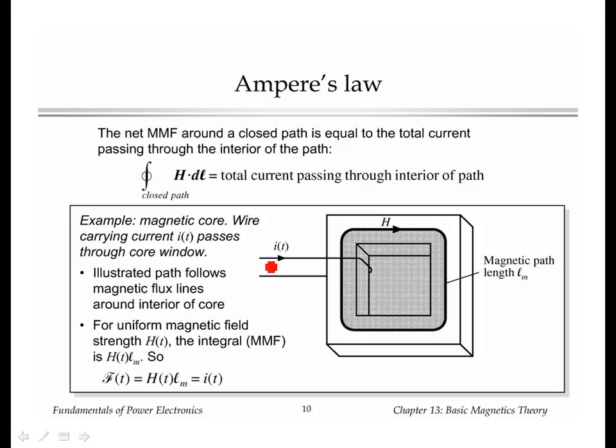What Ampere's law says is that you take a path, and a good path to take is the closed path that the magnetic flux lines take flowing around the interior of the core. Ampere's law says that if you integrate H dot DL around the path that the flux lines take, what you get is the total current that passes through the interior of the path.